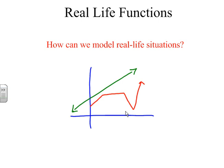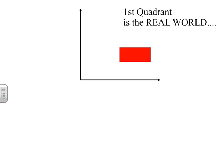But one of the things we have to realize about our real-life situation is that it all occurs in the first quadrant, because that's where the real world exists. Now, why is that? Well, in the first quadrant, everything is positive. We have positive time, we have positive other situations.